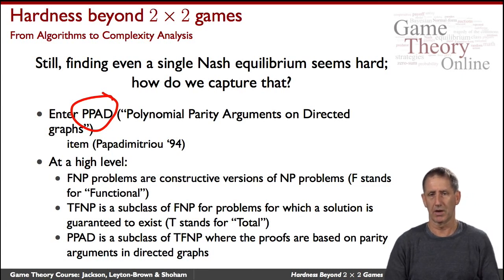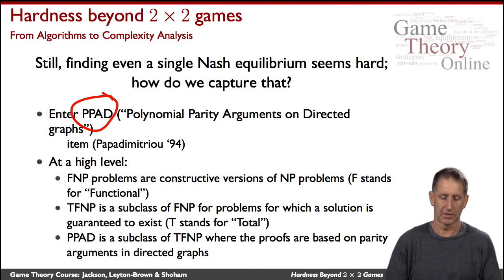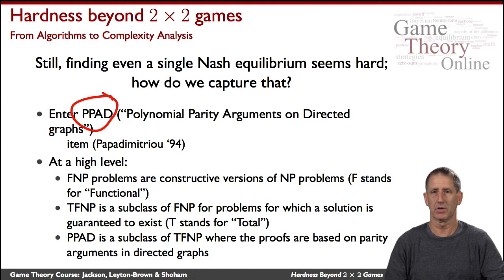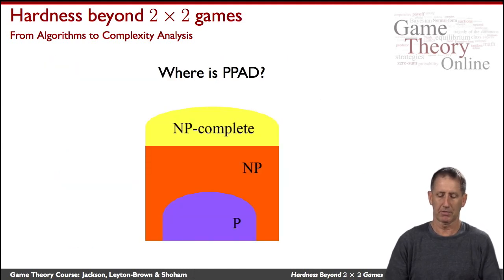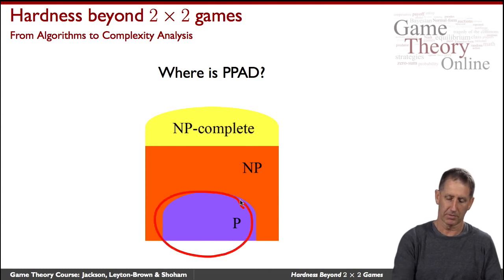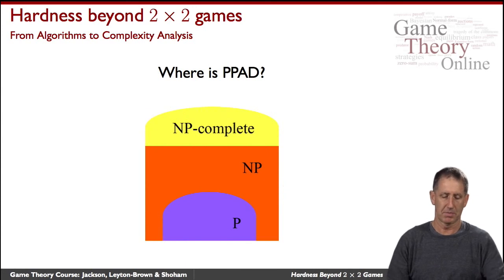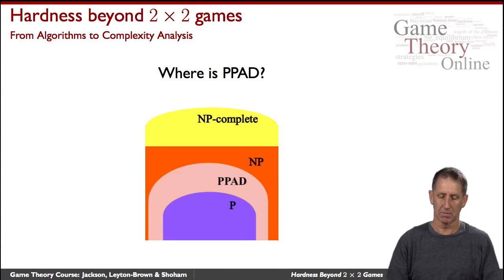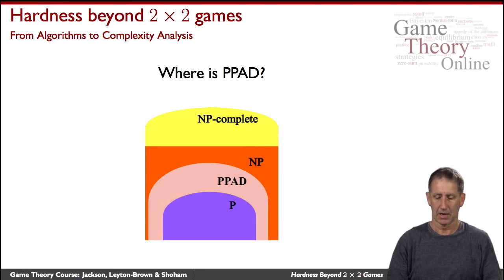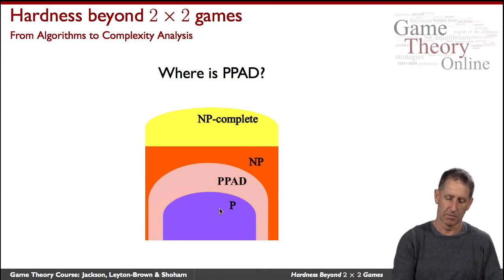PPAD is a specialization of a class called TFNP, which is in turn a specialization of a class called FNP. Going into detail is beyond our scope. But it does help us position the complexity of finding a Nash equilibrium in the complexity hierarchy. We have the class of polynomial time problems, problems verifiable in polynomial time, with NP-complete being the hardest. PPAD turns out to reside somewhere within this class. We don't know whether the entire class collapses — it's widely believed it does not, but proof doesn't exist. We do know that PPAD lies someplace in between P and NP.